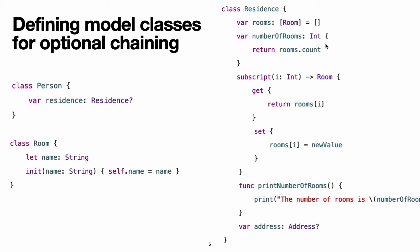The computed number of rooms property simply returns the value of the count property from the rooms array. As a shortcut to accessing its rooms array, this version of residence provides a read-write subscript that provides access to the room at the requested index in the rooms array. This version of residence also provides a method called print number of rooms, which simply prints the number of rooms in the residence. Finally, residence defines an optional property called address, which is of type optional address. The address class type for this property is defined later.